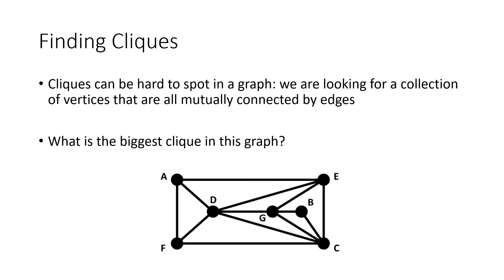Now finding cliques in a graph can be a little bit tricky. So here I've got a graph and if we want to try to find cliques, what we're looking for are some number of vertices that are all mutually connected by edges. Three-vertex cliques are pretty easy to find because that's just a triangle. So for example, vertex A, vertex D, and vertex F form a clique because those are three vertices that are all connected by edges. There's a whole bunch of these three-vertex cliques in the graph. But it turns out that there is actually a set of four vertices in this graph that are all mutually connected by edges. If you want, pause the video and see if you can find it.